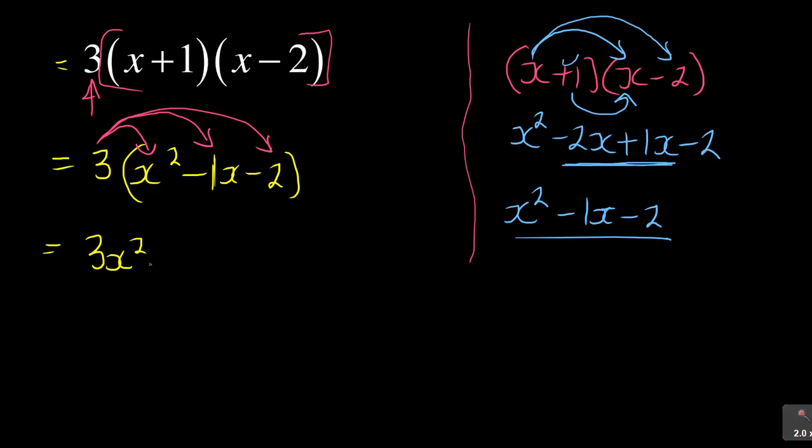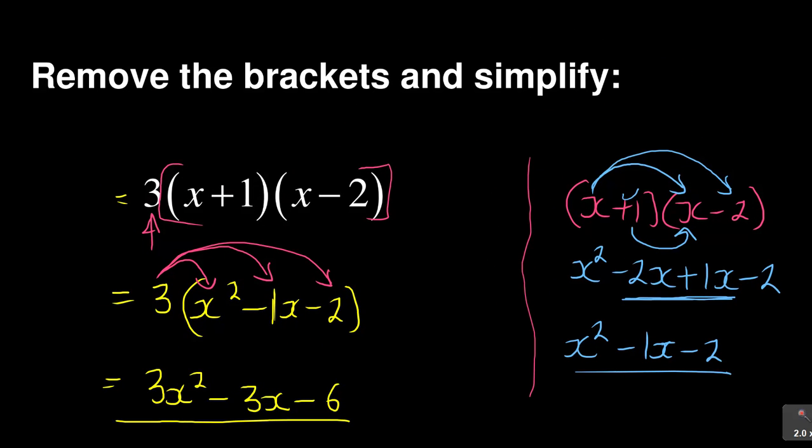Your answer is: 3 times x² is 3x². 3 times -1x is -3x. Remember, 3 times -1. Use a calculator. 3 times -2 gives you -6. This is what they mean when the question says remove brackets - we remove the brackets and simplify.